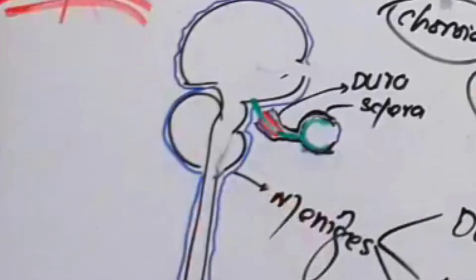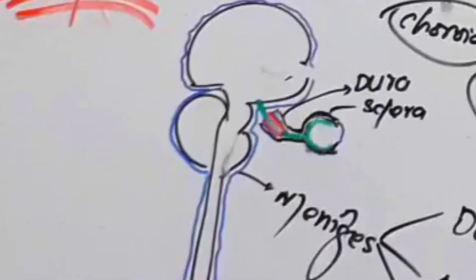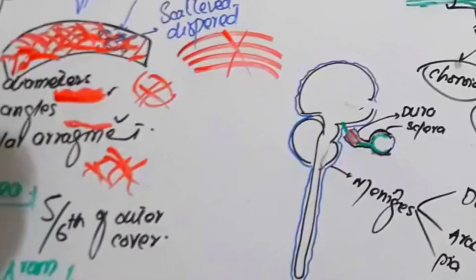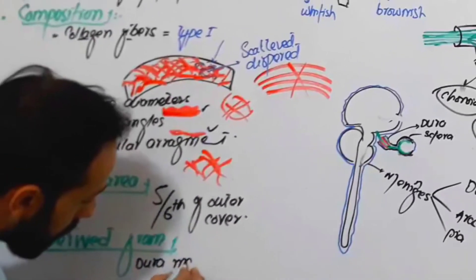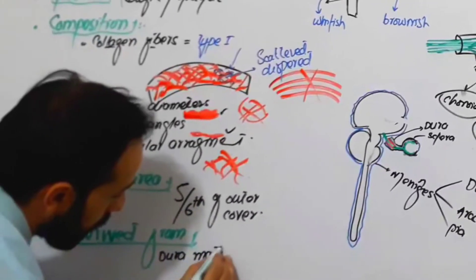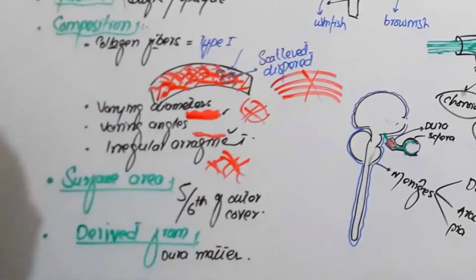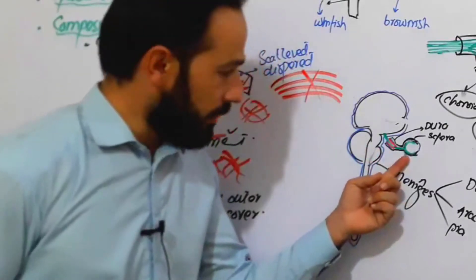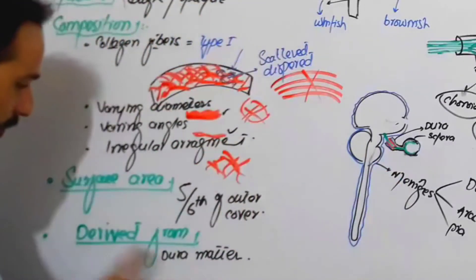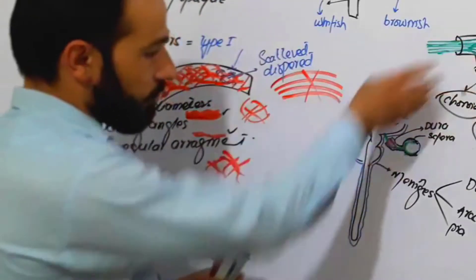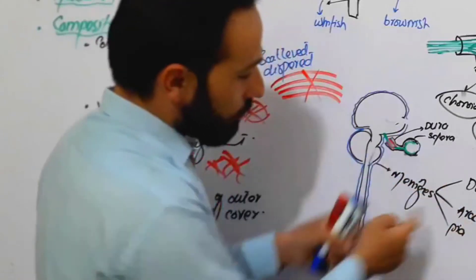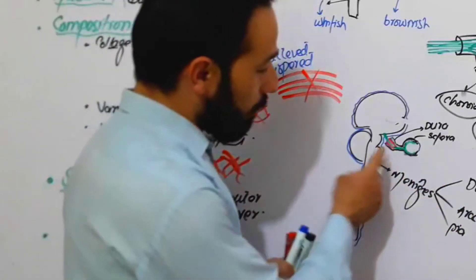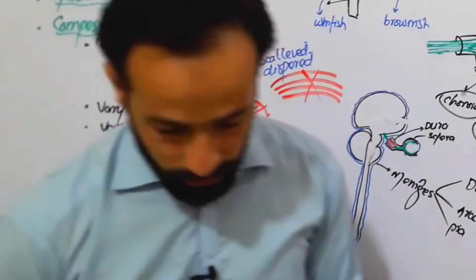So the sclera is derived from the Dura mater of the meningeal layer around the optic nerve. That's simple — this was the derivation of the sclera.